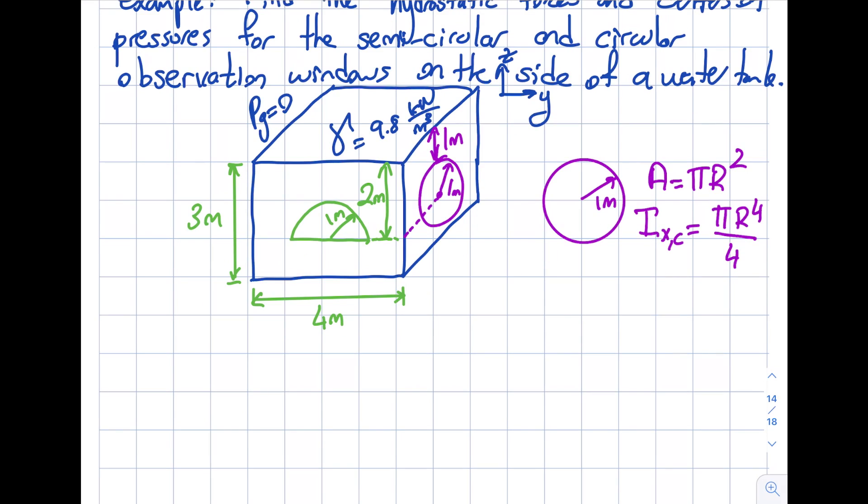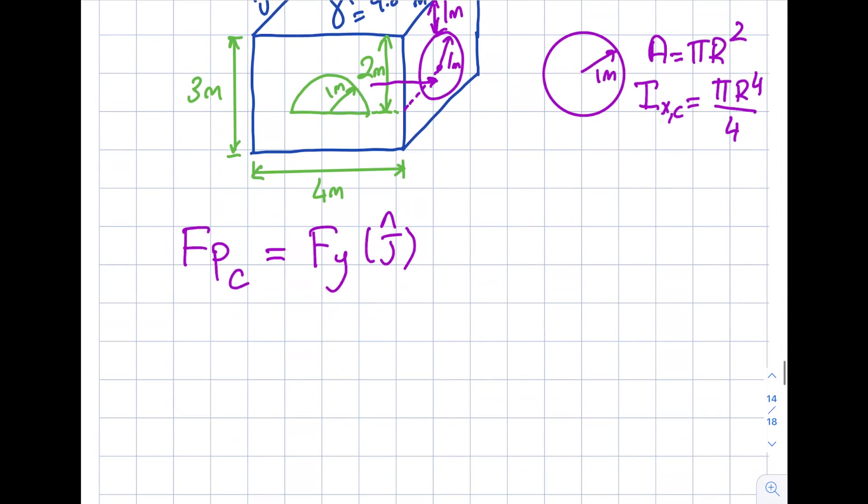So the only force that I will obtain will be like this, right? It will be a little bit below the centroid. Obviously it's a distributed force, but the hydrostatic combined pressure force is just one force a little bit below the centroid of the circle. So now my goal is to find that and you can see in here that let's call this Fpc circular will be equal to Fy times j, and the question is how am I going to obtain Fy? And I'll show you. I showed you in the previous segment three separate approaches and this one I will be going ahead and using formulation method.